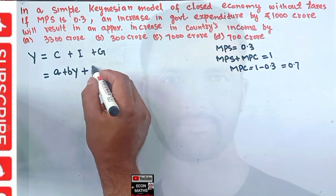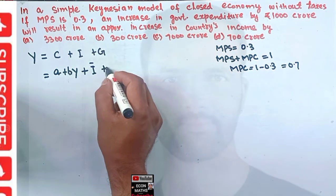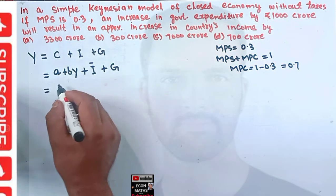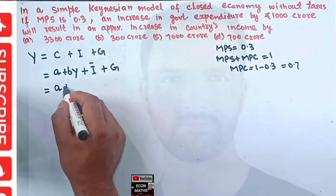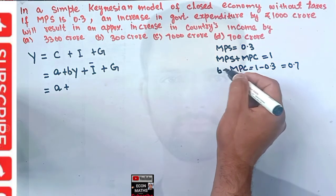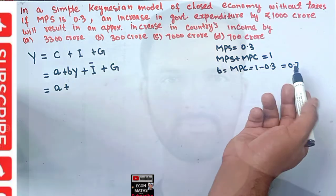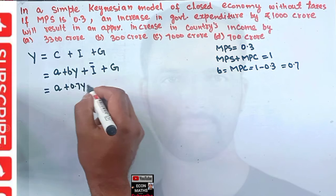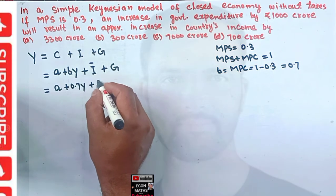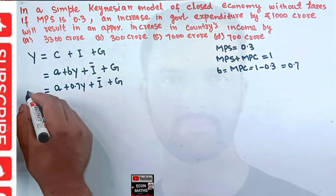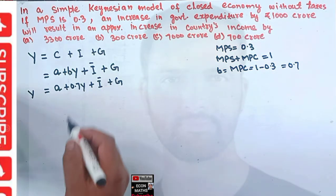Investment is constant so we write I-bar, and we have government expenditure G. So the full model becomes: Y = a + 0.7Y + I-bar + G, where b (also called MPC) is 0.7.